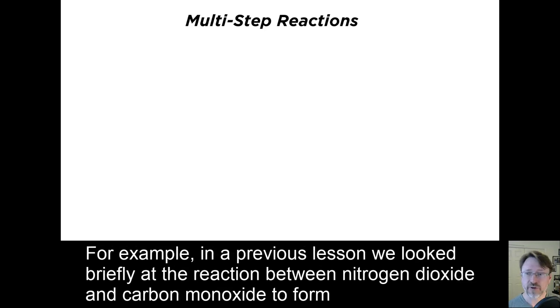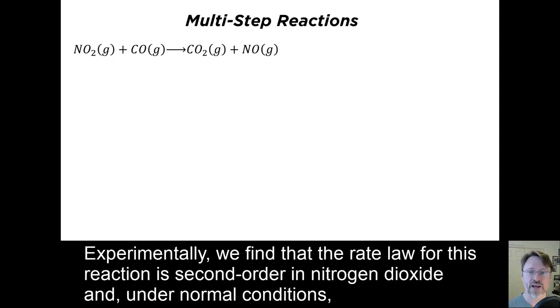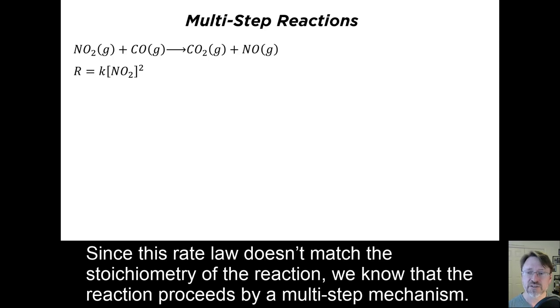For example, in a previous lesson, we looked briefly at the reaction between nitrogen dioxide and carbon monoxide to form carbon dioxide and nitrogen monoxide. Experimentally, we find that the rate law for this reaction is second order in nitrogen dioxide and, under normal conditions, is independent of the amount of carbon monoxide present. Since this rate law doesn't match the stoichiometry of the reaction, we know that the reaction proceeds by a multi-step mechanism.